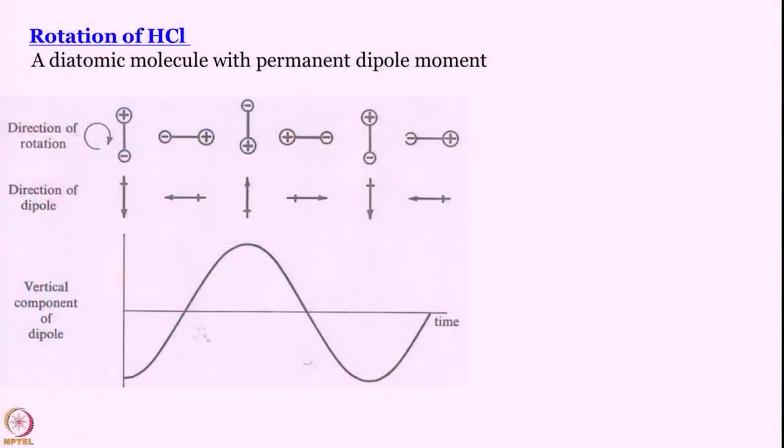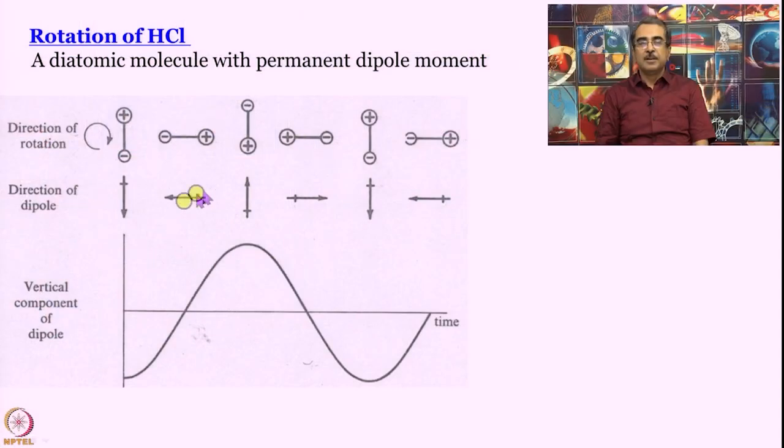That being said, let us talk about rotation of a simple diatomic molecule HCl. Note we are not talking about H2, why we will see why. What we need really is a diatomic molecule with permanent dipole moment, and this is a figure that is taken from Banwell and McCash's book. To be very honest I do not like this too much because it is always better to do the more rigorous treatment, unfortunately in this course there is no scope for it. So this should be good enough.